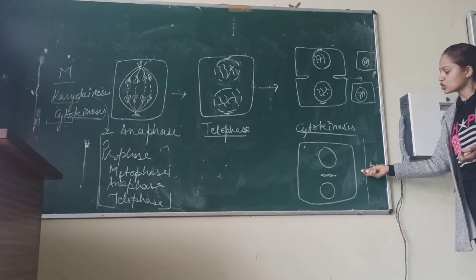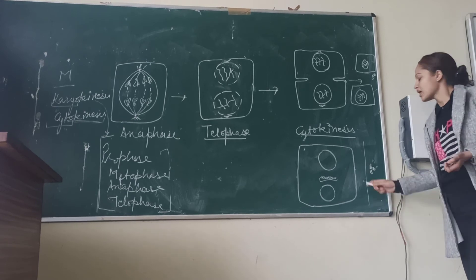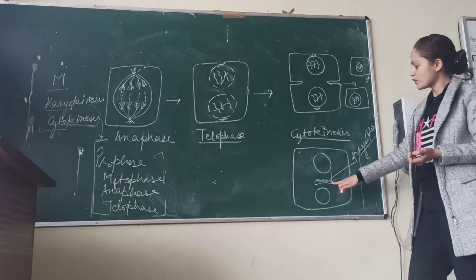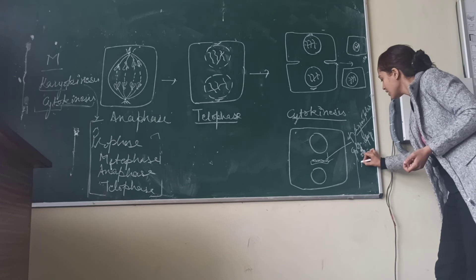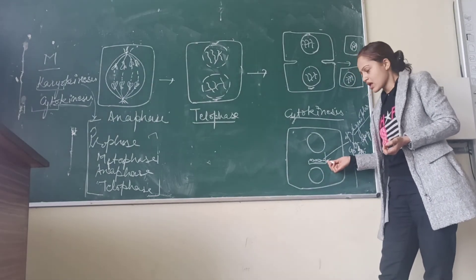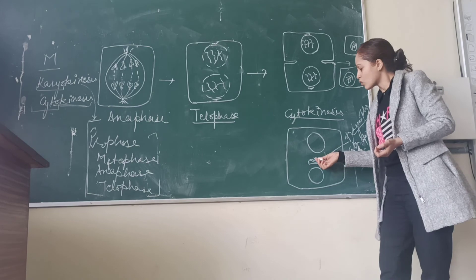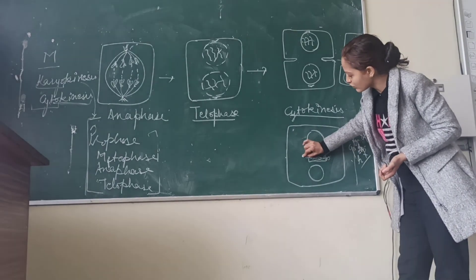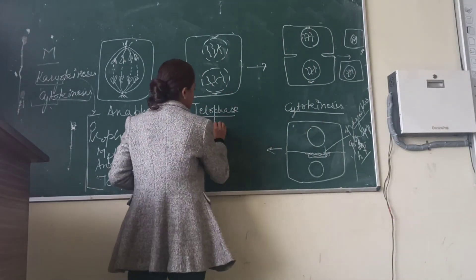In plant cells, no invagination forms. First, the phragmoplast membrane forms — it is called the phragmoplast. It is formed by the deposition of vesicles from the Golgi apparatus and endoplasmic reticulum. As the phragmoplast forms, the Golgi apparatus and endoplasmic reticulum release material outward, and the cell plate grows toward the periphery, resulting in the separation of the two daughter cells.